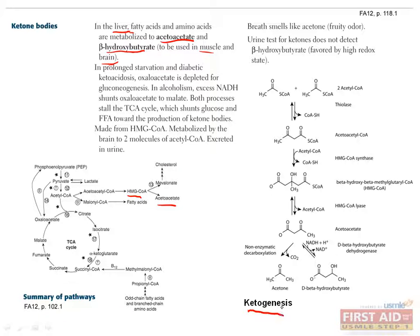The ketogenesis pathway is shown here. As you can see, acetoacetate is a precursor for the other ketones, beta-hydroxybutyrate and acetone. The acetone can give one's breath a fruity odor, which can indicate that someone is in diabetic ketoacidosis. In both prolonged starvation and diabetic ketoacidosis, oxaloacetate must be used for gluconeogenesis, and therefore it becomes depleted from the TCA cycle.